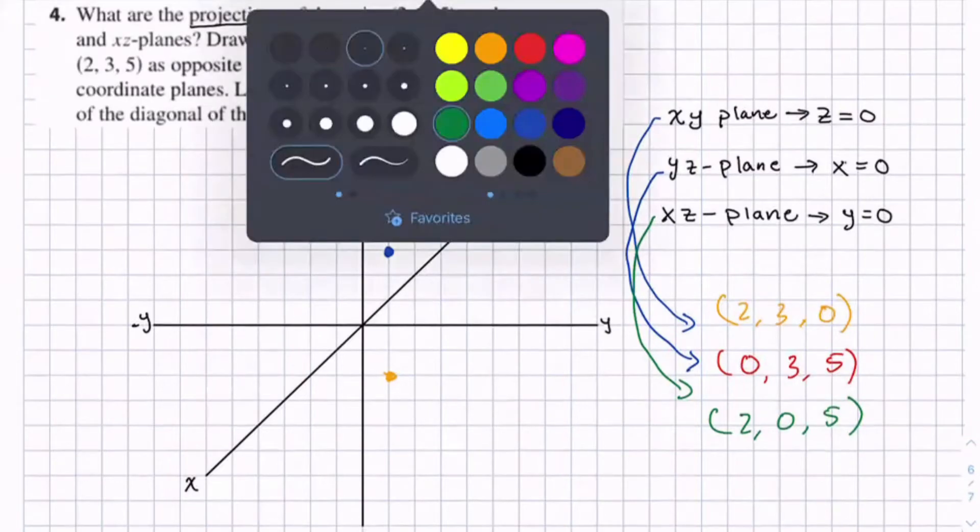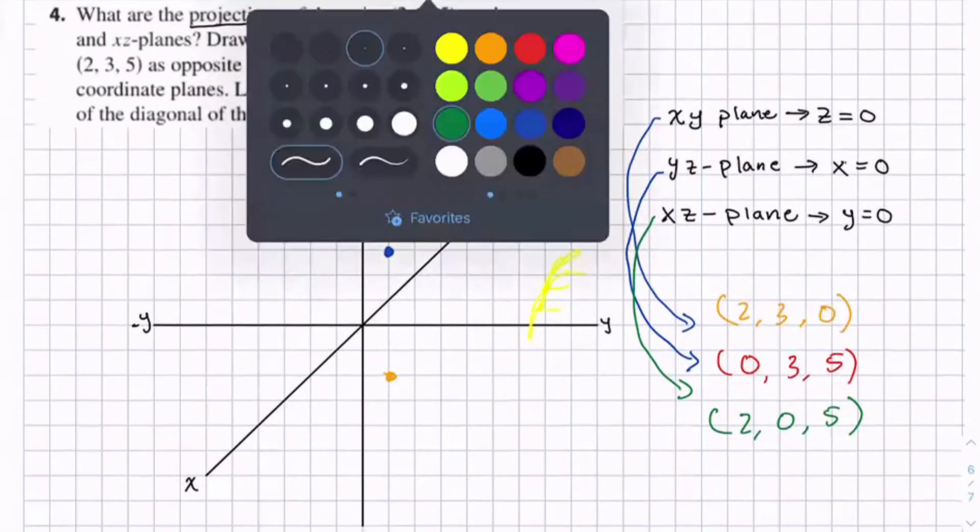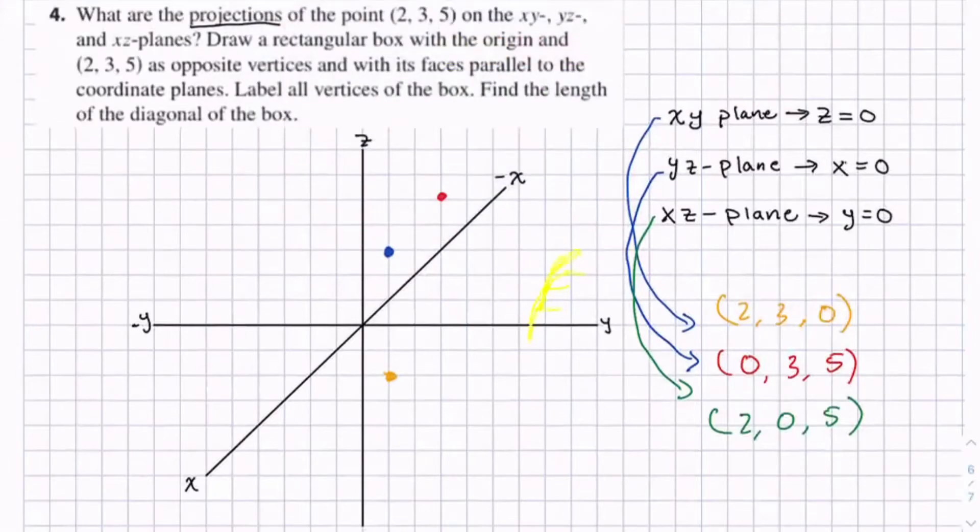So we would draw our light source kind of like over here, kind of like perpendicular to the xz plane. And it would create a projection kind of hard to draw, like over here.